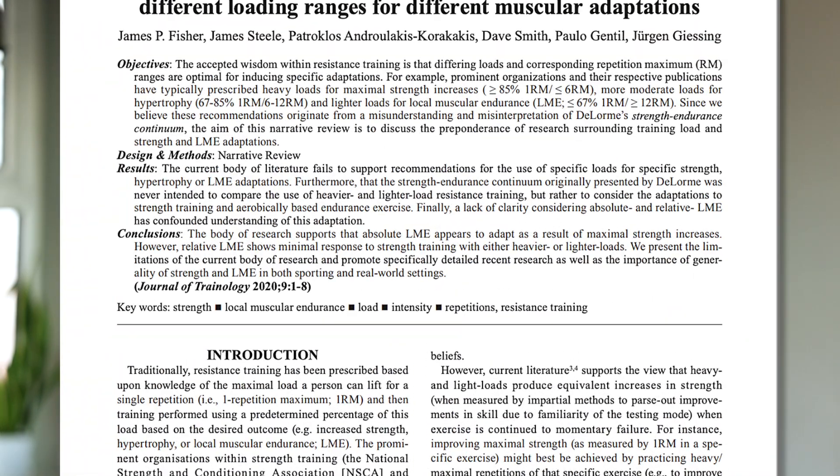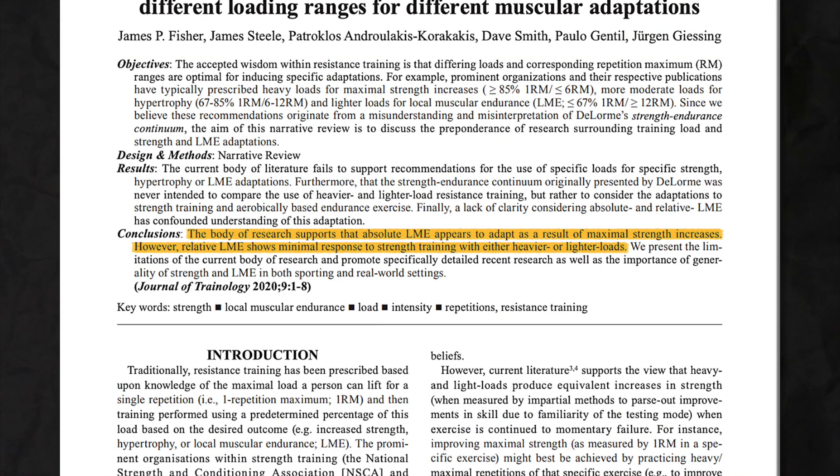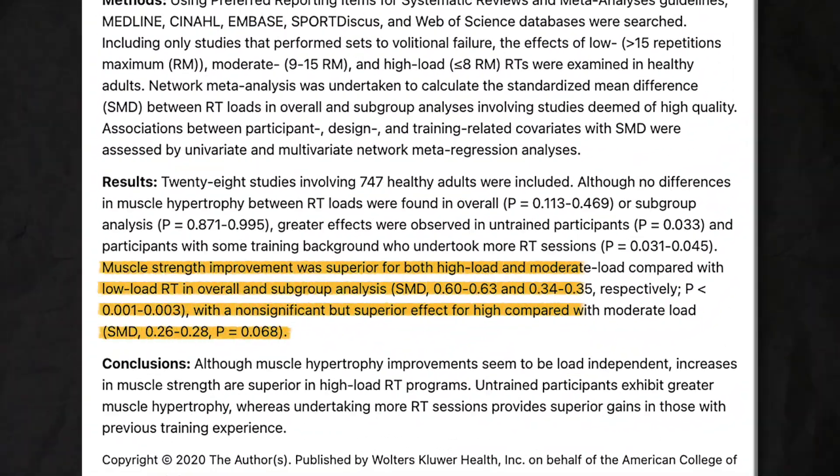Number three: specificity also applies to loading range. This is mainly the case for maximum strength — it's contentious whether it applies to strength endurance or higher rep strength. But for maximum low-rep strength, there is definitely a specificity component to how much weight you're lifting. If you want to get stronger at low reps, you do need to lift heavy. The adaptations are distinct between lifting heavier and lifting lighter, so for strength athletes, most of your training should be pretty close to those low rep ranges.